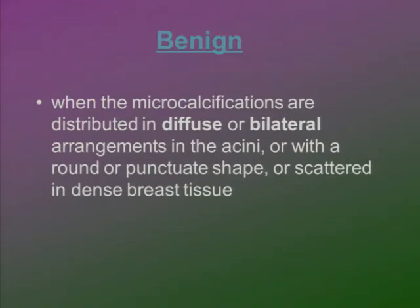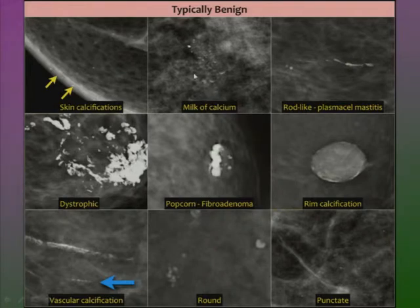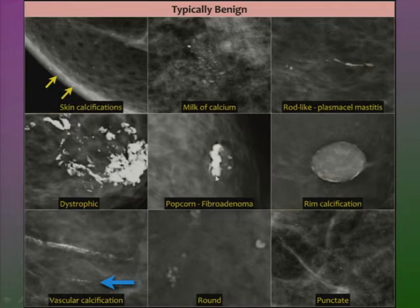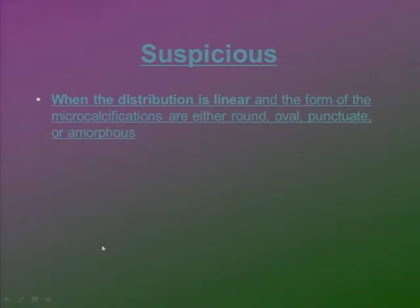To summarize: benign calcifications are diffuse or in both breasts, have a round shape, or are scattered in dense breast tissue. The skin 'tattoo sign' doesn't change its shape in any view. Milk of calcium is typically benign and probably lobular. Rod-like (mastitis), dystrophic, coarse/popcorn (fibroadenoma), eggshell (oily cysts/fat necrosis), vascular, round, and punctate — but diffuse — are all benign. Suspicious calcifications have linear distribution, are very fine, and have poorly defined morphology.